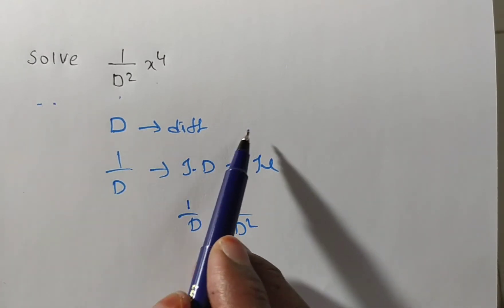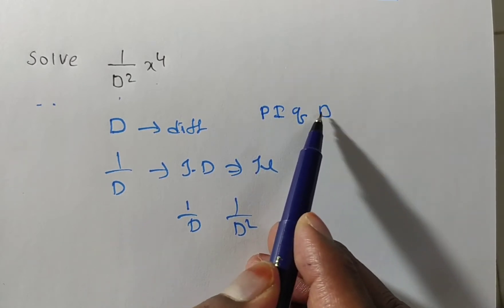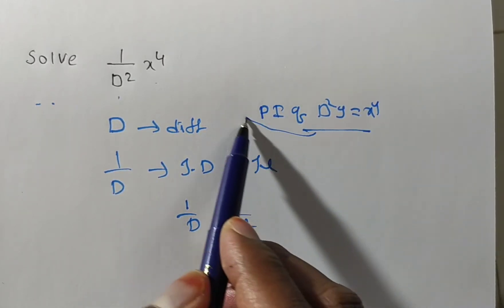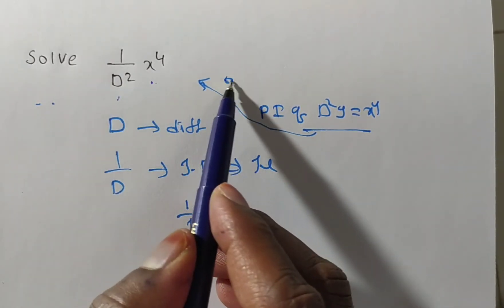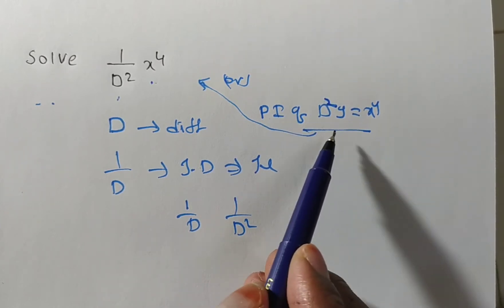Generally this problem may be asked as find the particular integral of D squared y equals x to the power of 4. Same problem may be asked as solve 1 by D squared x power 4, or find the particular integral of D squared y equals x power 4.